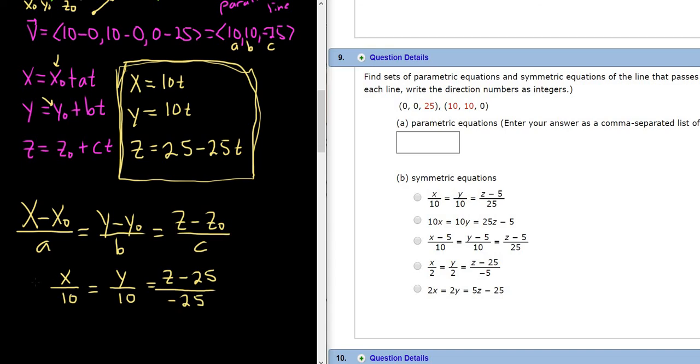Notice if we multiply everything by 5, so I'll put a 5 everywhere. We get x over 2 equals y over 2 equals z minus 25 over negative 5. And so, yep, that's the choice.